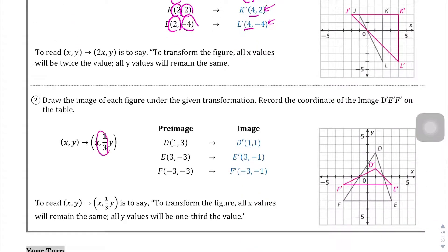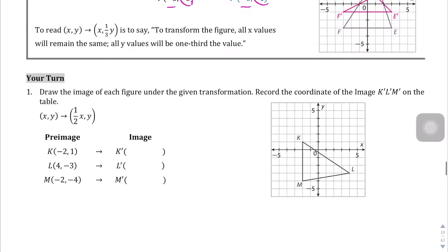Here you have (1/3)y, so any time you have y, you're going to divide it by 3. So 3 divided by 3 is 1. Negative 3 divided by 3 is negative 1. Negative 3 divided by 3 is also negative 1. And the x values in this case have stayed the same. So let's do the 'your turn' examples.